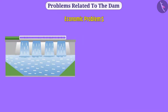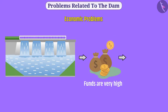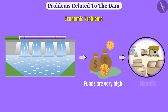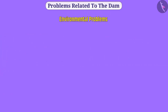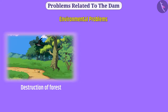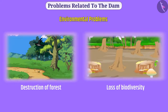Economic problems: for large projects, public funds spent are very high but compared to this, there is less or no benefit. Environmental problems: large-scale destruction of forest wealth results in loss of biodiversity.